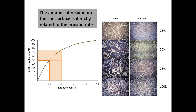When looking at soil erosion by water, we know that crop residues are our best defense. The amount of residue on the soil surface directly relates to the amount of erosion. Looking at this graph, residue cover is on the horizontal axis and soil erosion reduction is on the vertical. About 30% residue cover will reduce erosion by about 50%. On the right side, examples of corn and soybean residue show what 30% residue looks like — and you can see it doesn't take a lot of residue to make nice steps forward in reducing erosion.